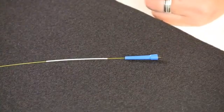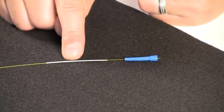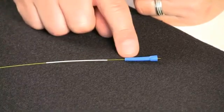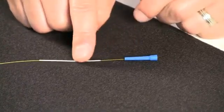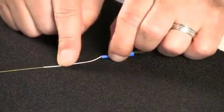When terminating 250 micron fiber onto an OptiCam, you need to install a buildup tube before you install the boot. So the buildup tube will slide onto the fiber and then the boot slides over the buildup tube.